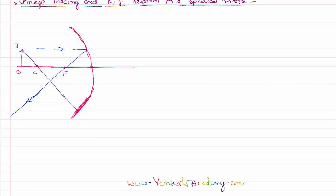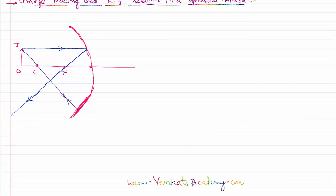One more rule: the light ray that is passing through the center of curvature, after striking the curved surface, will retrace its path — it comes back the same way. You might have noticed that these two reflected light rays are meeting at a particular point, so here an image is already formed. This is how the image is formed.